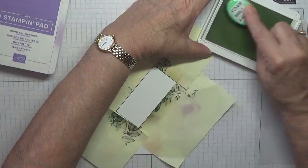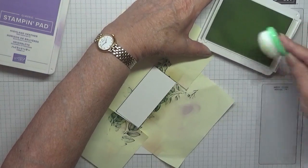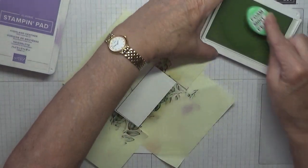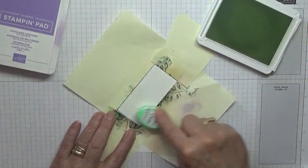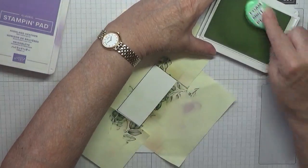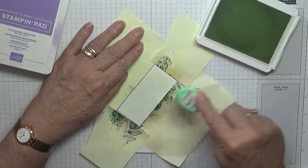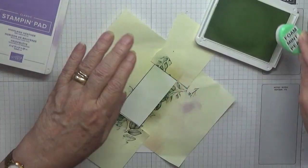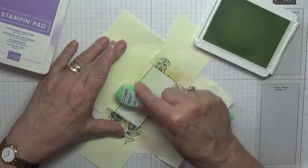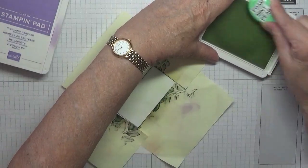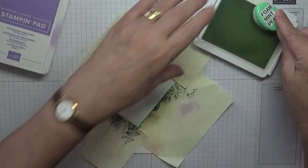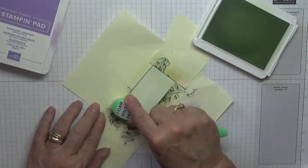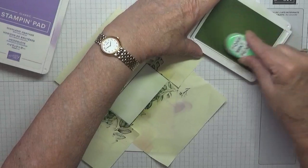I'm going to use Soft Sea Foam in the middle, so ink up my brush. Now I don't want this all nice and smooth, I want it patchy. Don't think Soft Sea Foam is a good color for this, takes a while to get it on. Aha, it's coming.